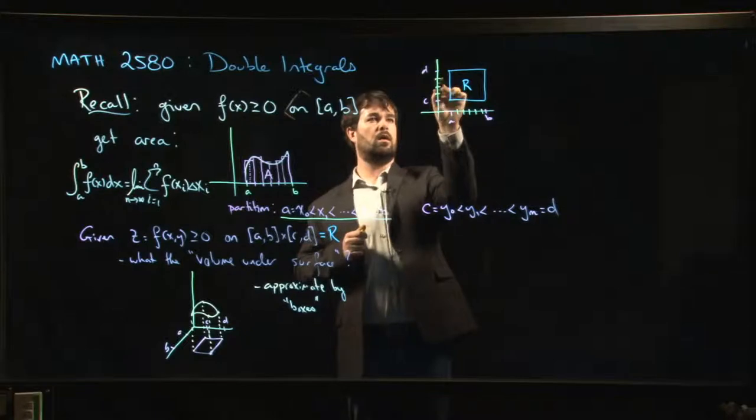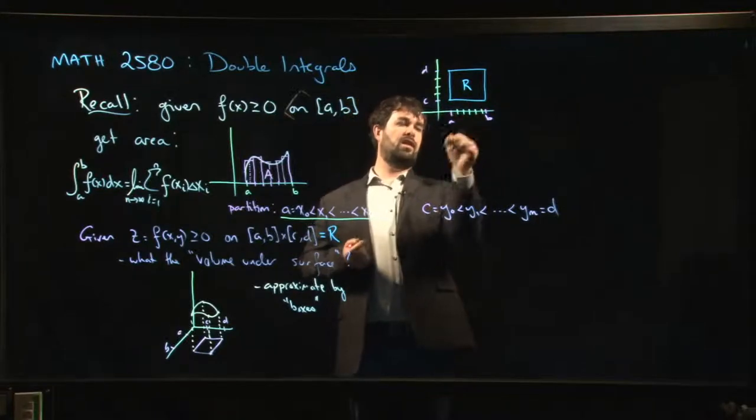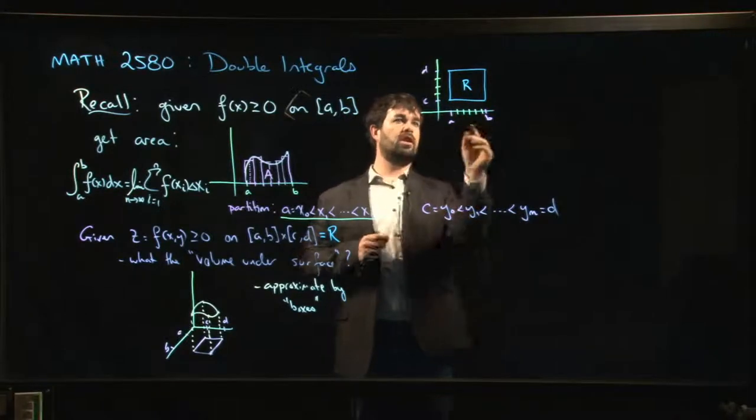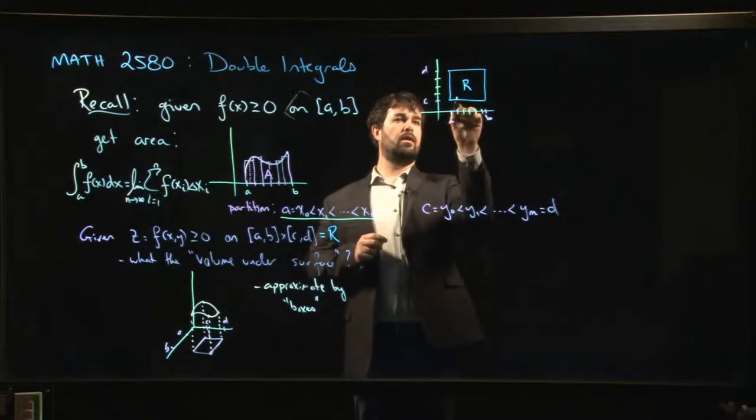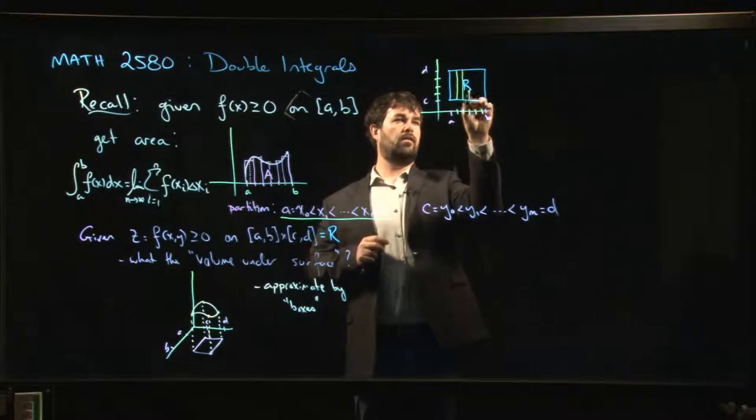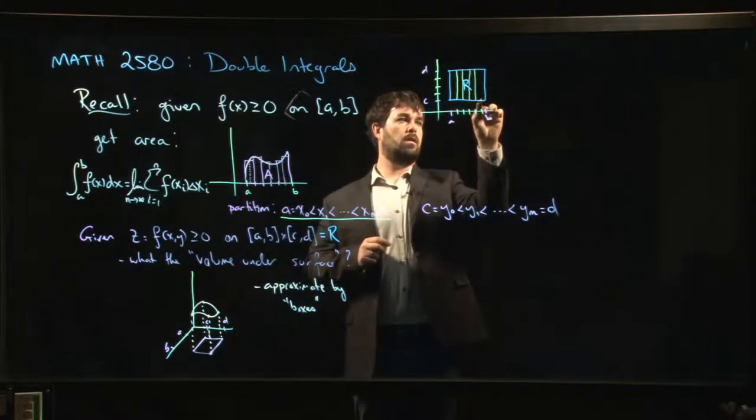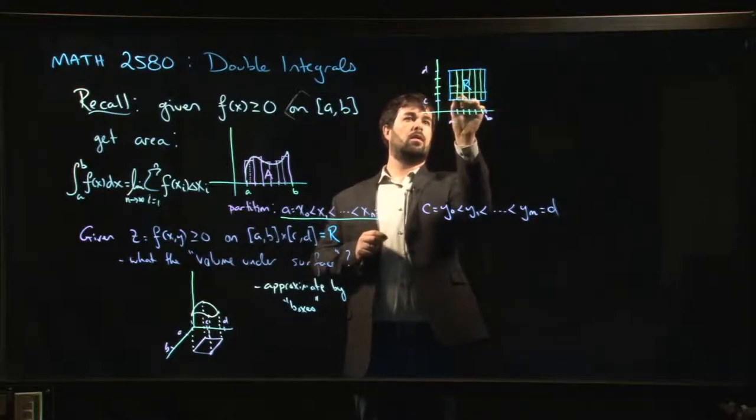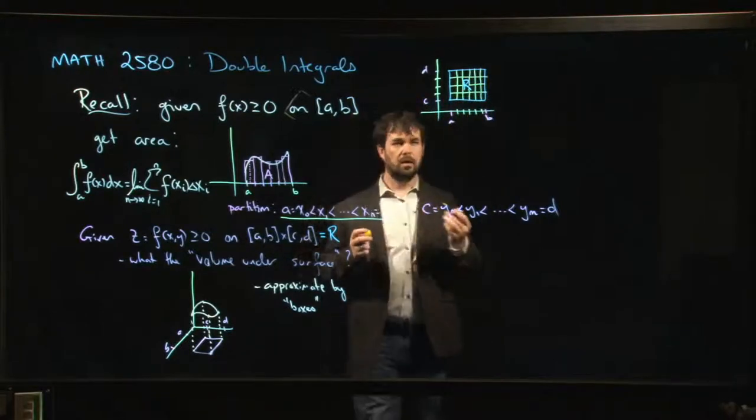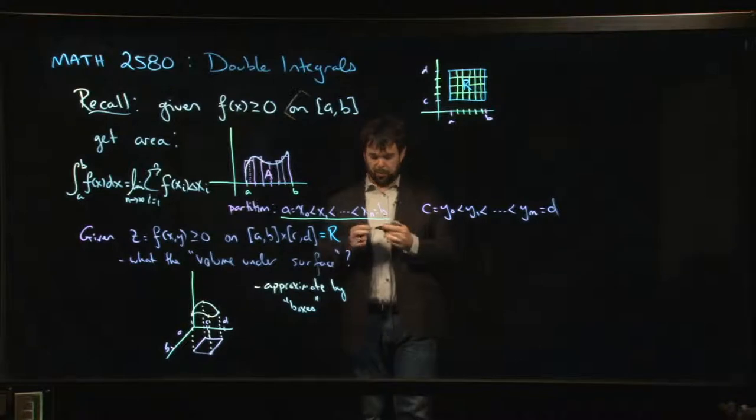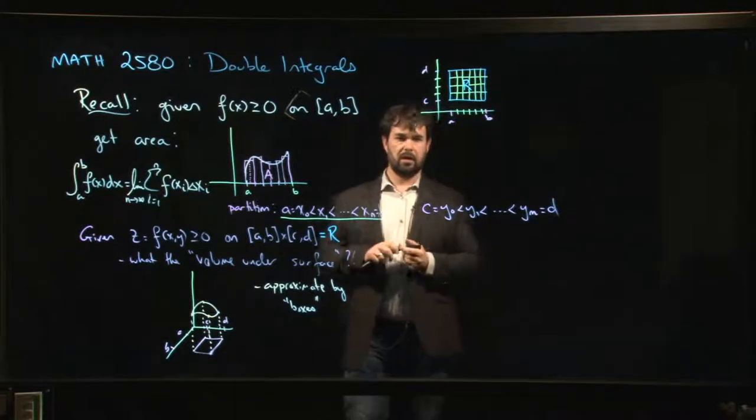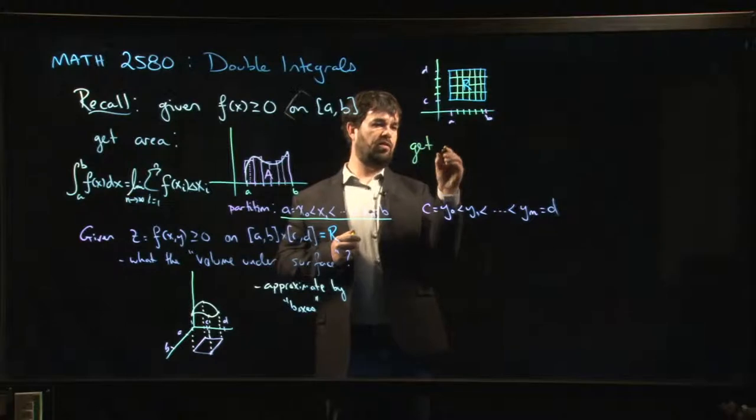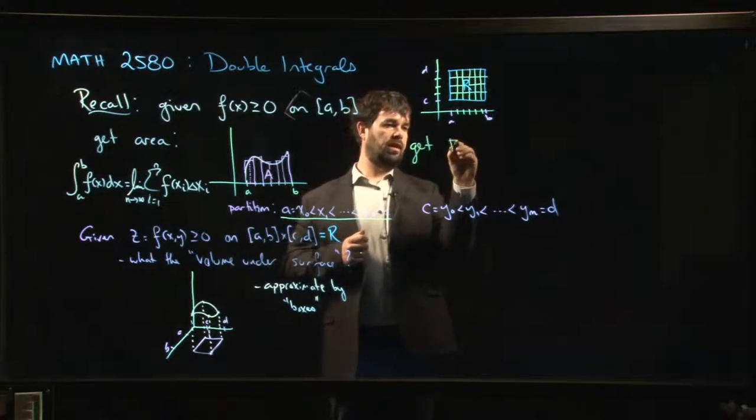So we've put in some points there. And now you can see that these two partitions, what they do is they take your big rectangle and they divide it up into a bunch of little rectangles. So now your big rectangle becomes a bunch of little rectangles. And what we get are, well, there's a whole bunch of them.